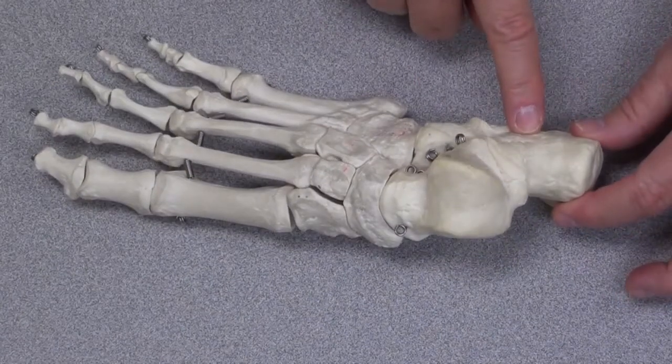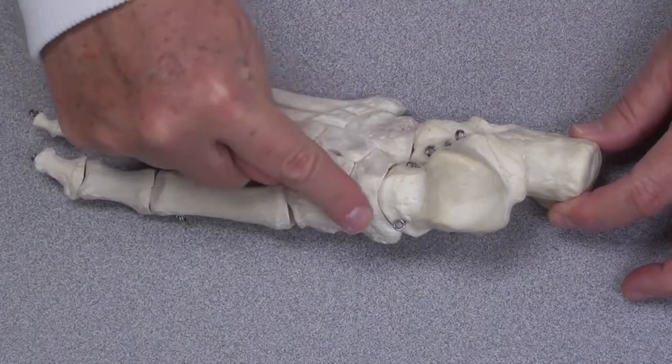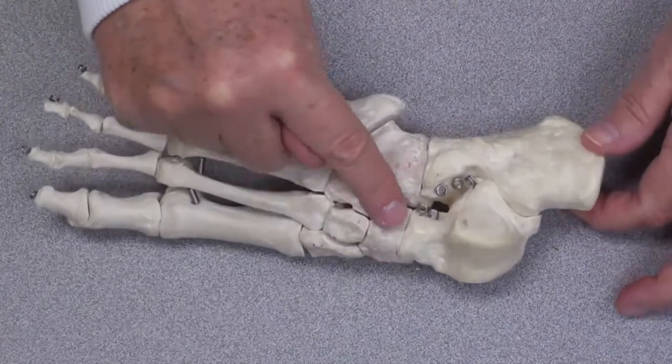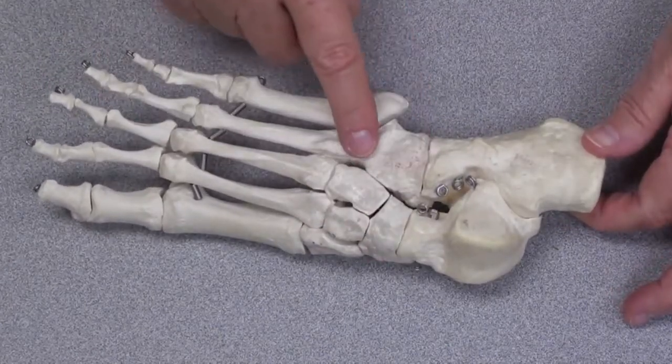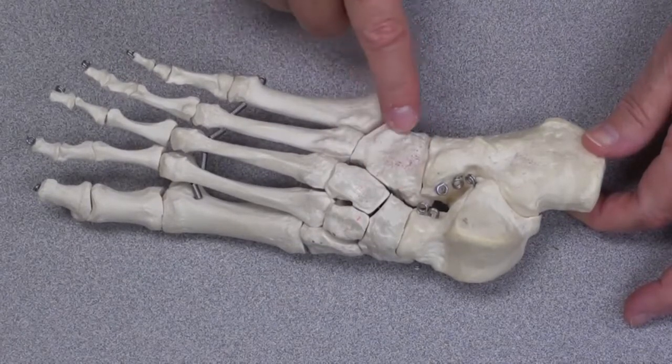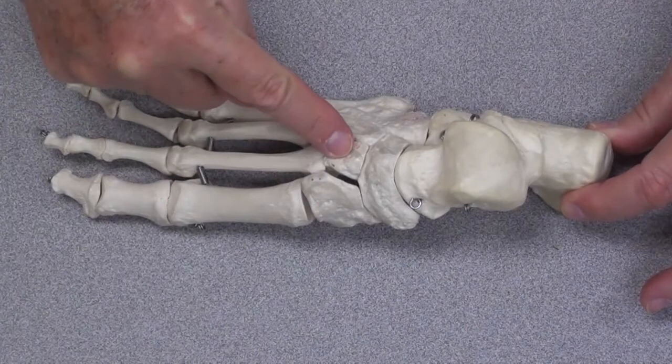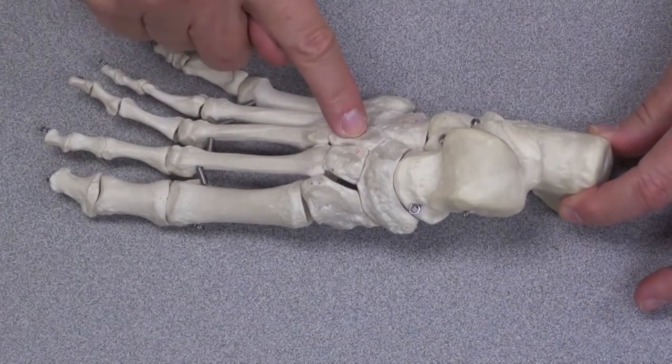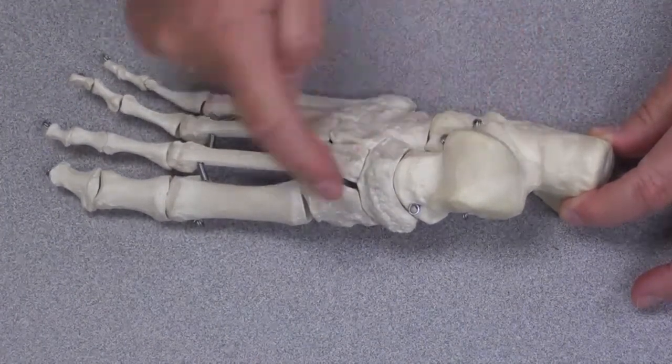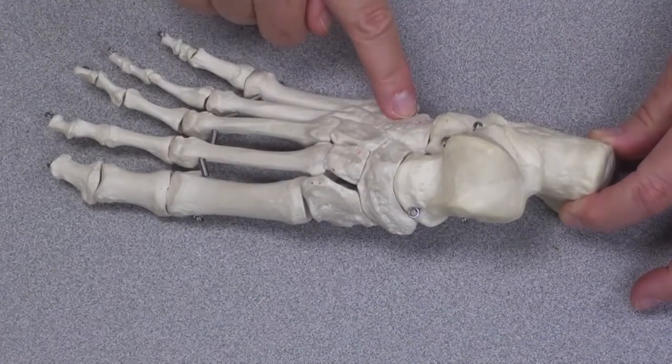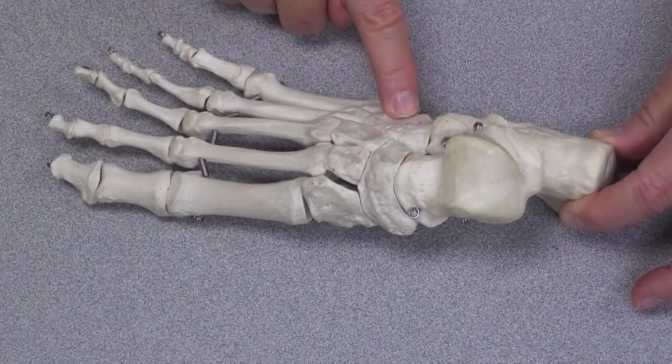The other tarsal bones include the navicular, the cuboid, which is kind of almost a cube, medial, intermediate, and lateral cuneiform bones. So these seven bones are considered the tarsal bones.